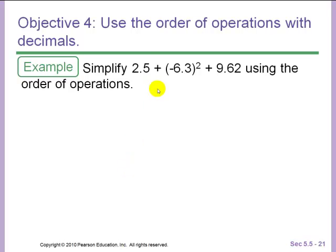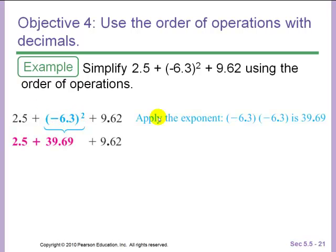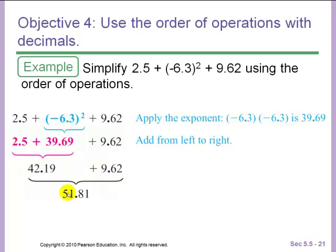Example: simplify 2.5 plus parentheses, negative 6.3 parentheses squared, plus 9.62. Even though we have parentheses, there isn't actually an operation here. These parentheses are just because we have a negative number. So we'll start with exponents. Negative 6.3 squared is negative 6.3 times itself, which is 39.69. Write that down. Notice how everything else stays lined up exactly where it was. Be very careful with your organization. Do all of your steps on the left and then do any arithmetic on the right. Now we're going to add from left to right. So we'll start with these two. We get 42.19. And then lastly, we'll add these two and we get 51.81. Your final answer is 51.81.